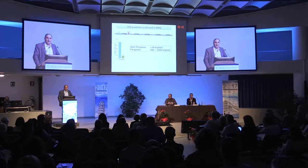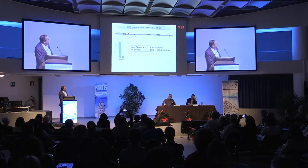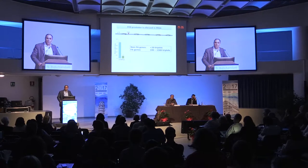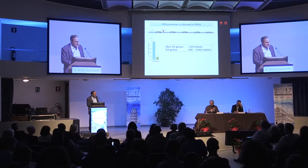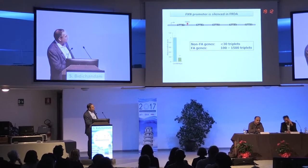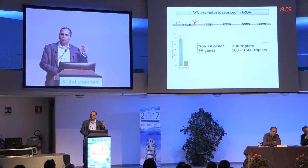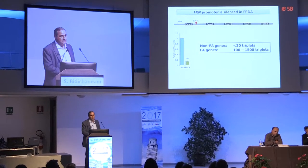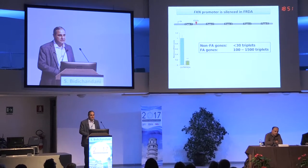Just to remind everybody, FA is caused by an expansion in intron 1. Non-FA genes have less than 30 triplets, and patients will have more than 100, but typically more than 400 repeats. This is a recessive condition, and patients have to be homozygous for this mutation. People who are heterozygous don't have a phenotype, and people who have at least one repeat less than 400 will have a milder phenotype. What you're getting is a loss of function because of a transcriptional deficiency.